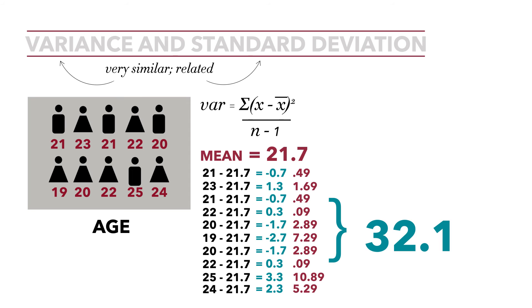We now have the numerator of our formula, 32.1 over n minus 1, which is 10 minus 1 equals 9. So 32.1 divided by 9 is 3.57. The variance for these data is 3.57. Again, this is the average squared difference, the variance: 3.57.